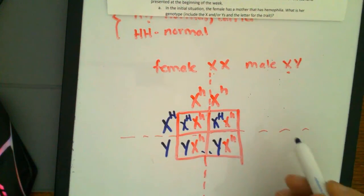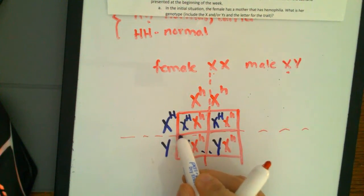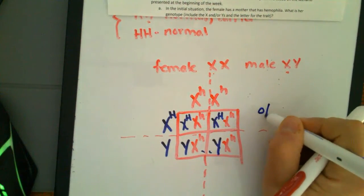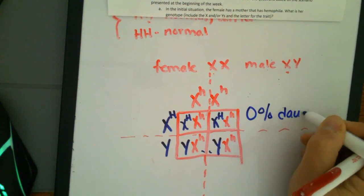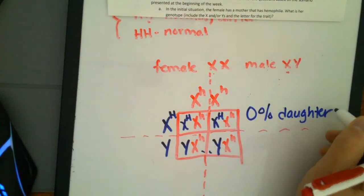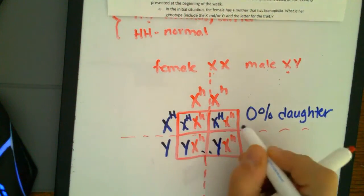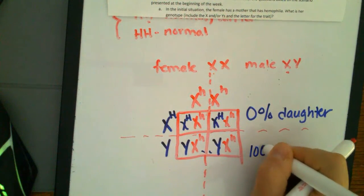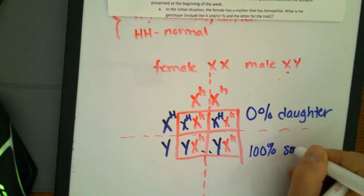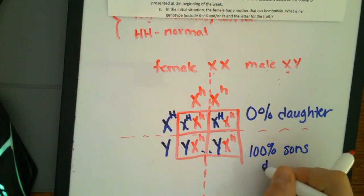However, if you look closely, you have a 0% chance of daughters having it. Every single one of your daughters has got an X, a big letter, a big H. But 100% of your sons will have the disease.